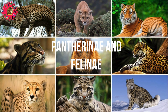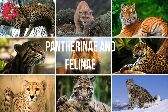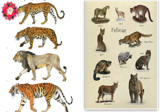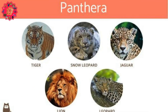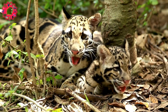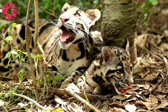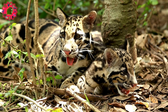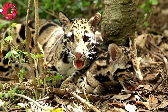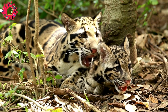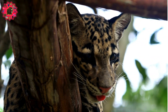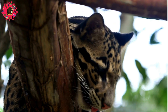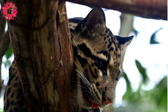Pantherini and Felinae. Felidae today consists of two major branches, Pantherini and Felinae, which split off around 10 million years ago. Pantherini consists of two closely related genera, Neofelis and Panthera, which split off from one another about 6.4 million years ago. The Neofelis genus contains the Clouded Leopard and the Sunda Clouded Leopard, cats found in Southeast Asia with several defining characteristics such as a cloudy pattern on their fur and elongated canines similar to those found in Machairodontines.